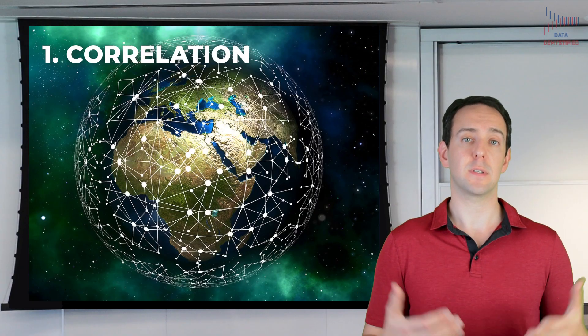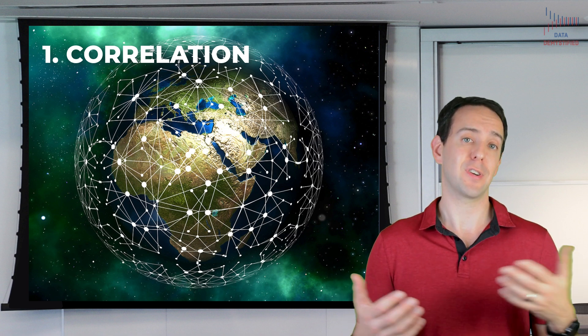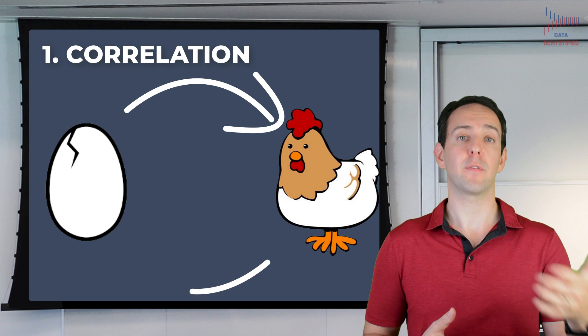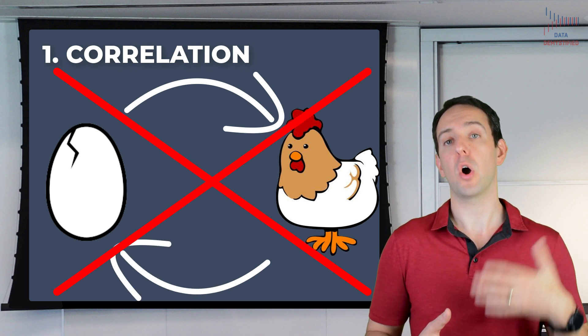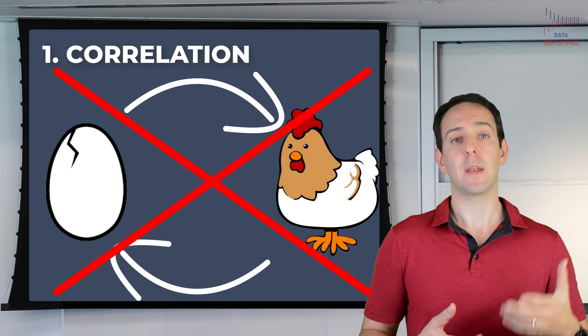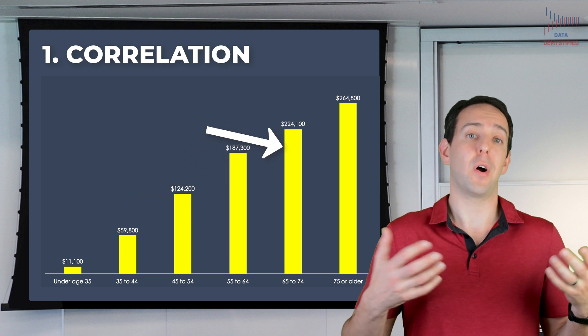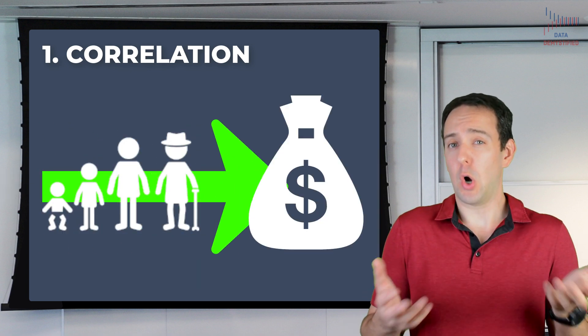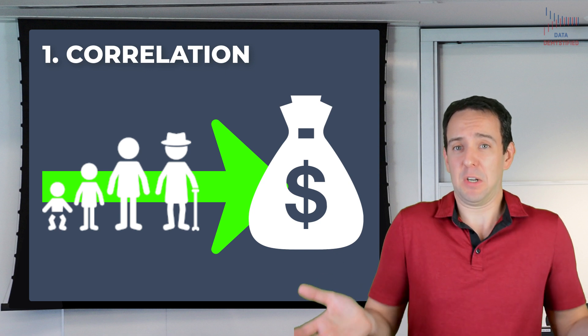But why do we even care about correlations in the first place? Well, correlations are what allow us to understand the associations and relationships between concepts and ideas in our world. They are one of our simplest statistical tools to help us understand how interconnected our world is. But what they don't tell us is anything about whether one of those concepts and ideas are somehow causally linked to the other. In other words, even though age and wealth are correlated, does that mean age causes wealth?